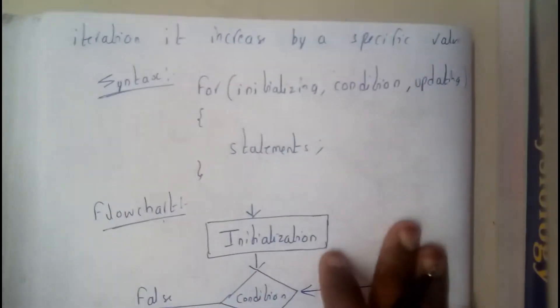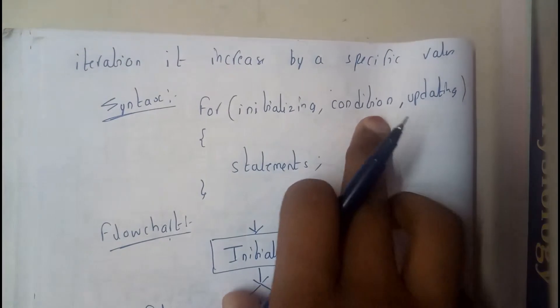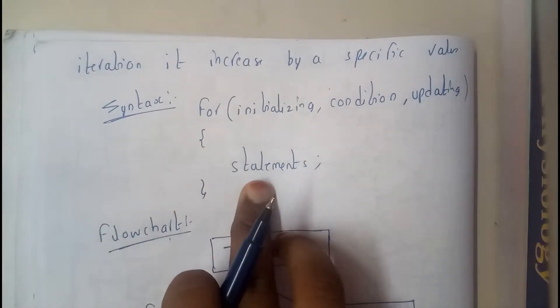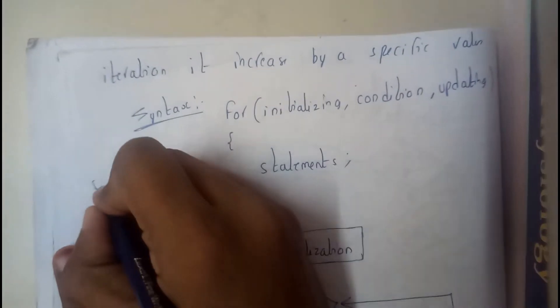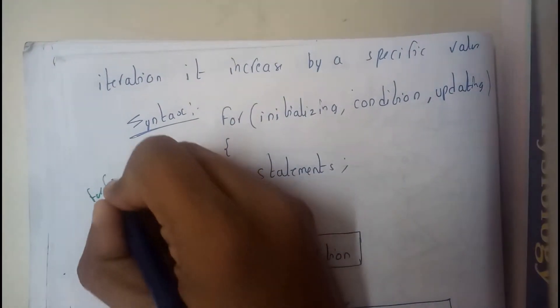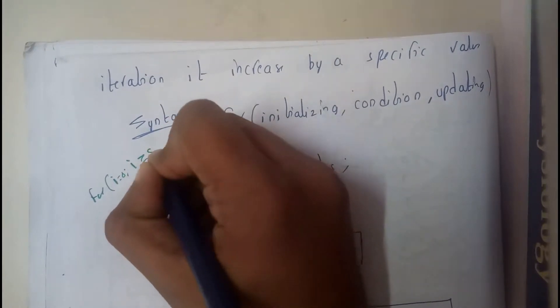So the syntax will be in this format: for initialization, condition, updating, and then we will be having statements. So initialization - I will be just writing an example: for i equals 0, condition is nothing but i greater than or equal to 5...